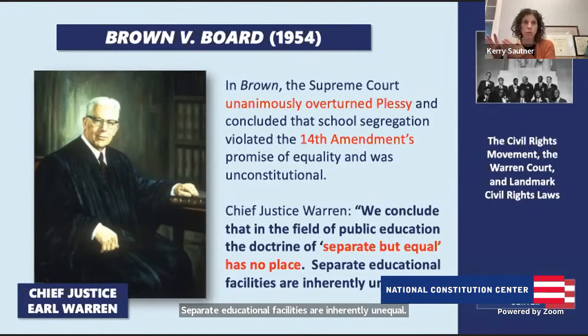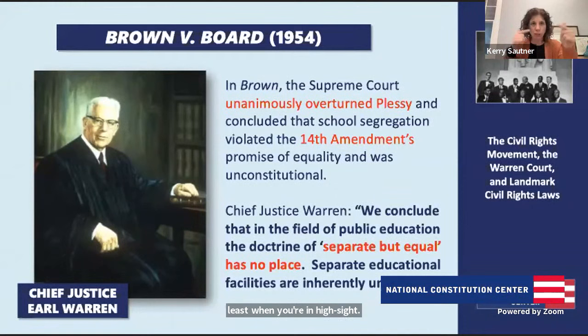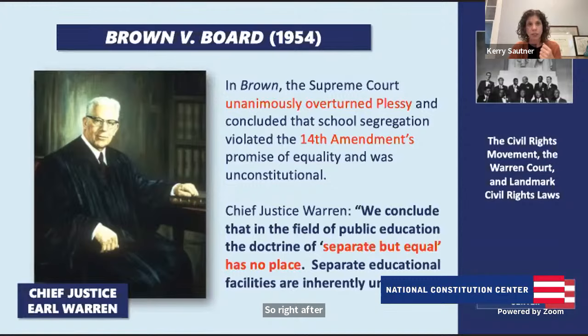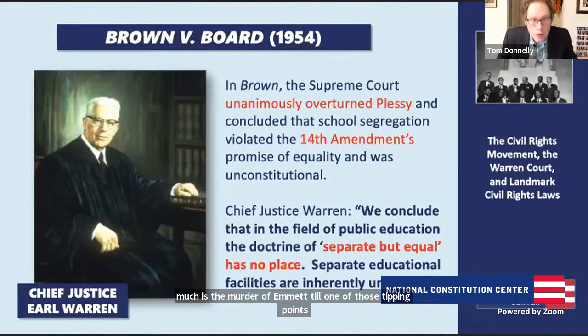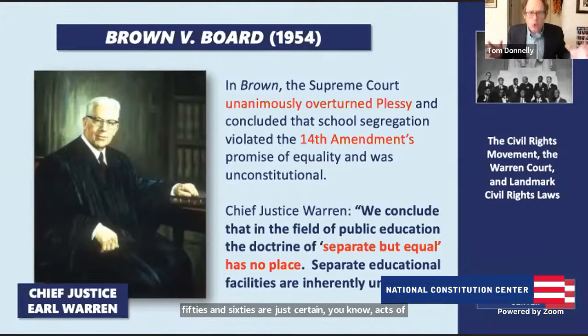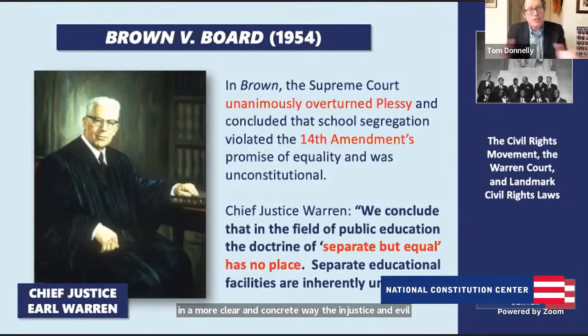This feels like a roller coaster — you've got all these moments that boom, boom, boom, and things start to roll. There are a couple of tipping point moments. One of our students brought up how much the murder of Emmett Till in 1955 — right after Brown versus Board of Ed — was one of those tipping points. It ends up being a galvanizing force for the civil rights movement itself. In the 1950s and 60s, certain gruesome crimes galvanize support among moderate white Americans who begin to see in a more clear and concrete way the injustice and evil of the Jim Crow system. The murder of Emmett Till helped crystallize that.